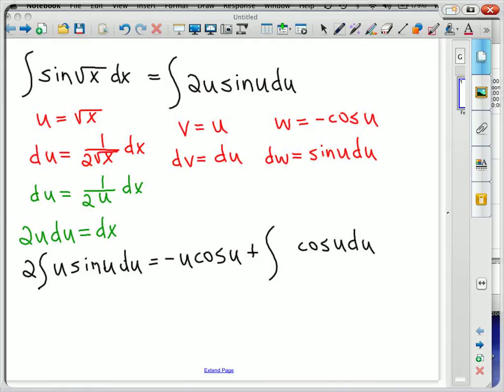I do want to be careful though. I have neglected to include my 2. So I'll just tack that on the end. And I want to make sure. So what I get is negative 2u cosine of u plus 2 times the sine of u plus c. That's our answer.